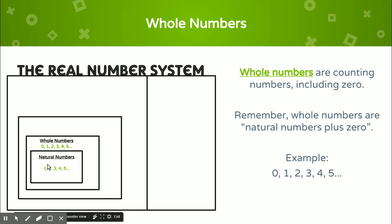One, two, three, four — they're all whole numbers. However, zero is only a whole number; it's not a natural number. This is why whole numbers go on the outside of the graphic organizer, because zero cannot be included within natural numbers.